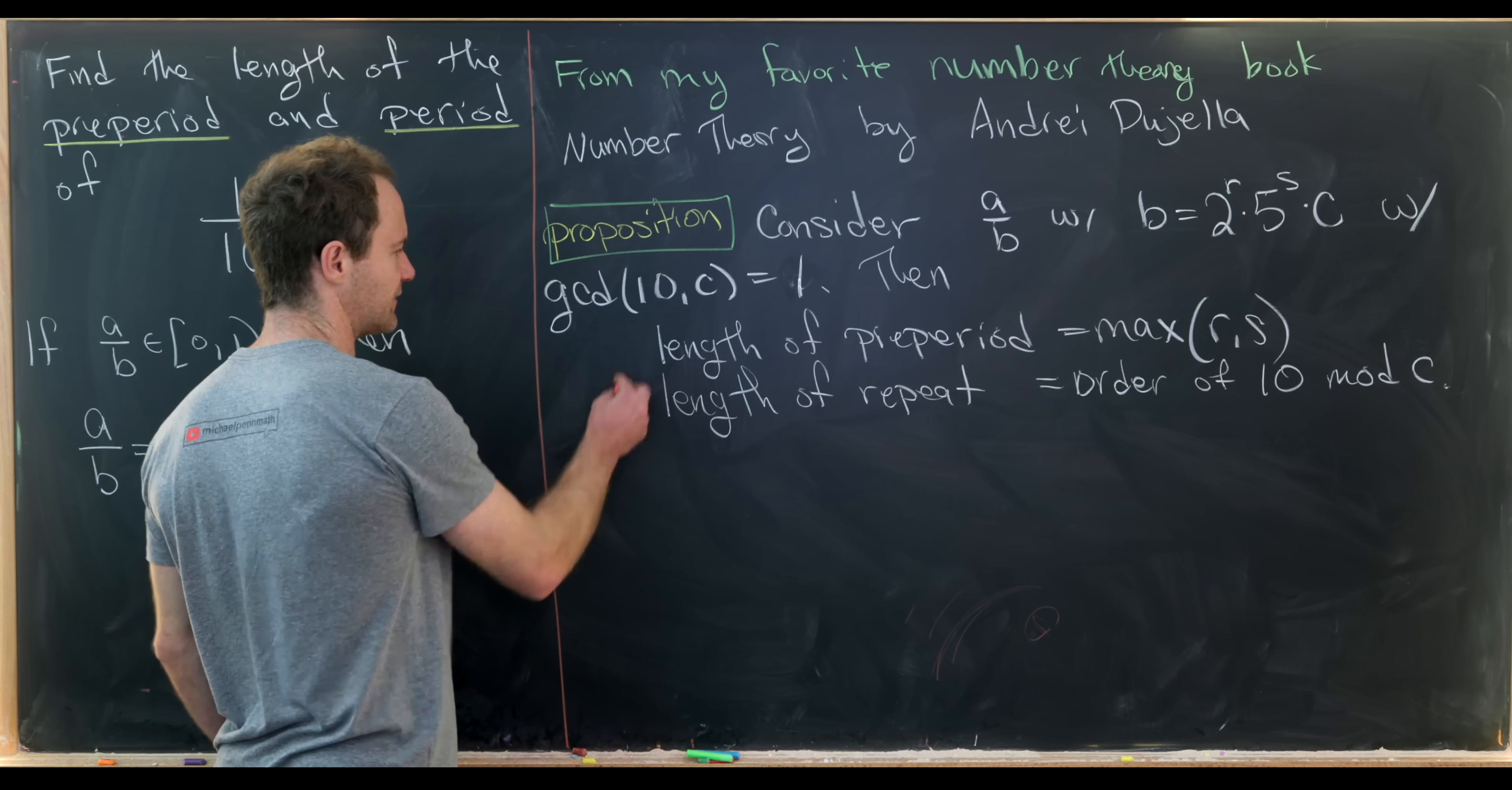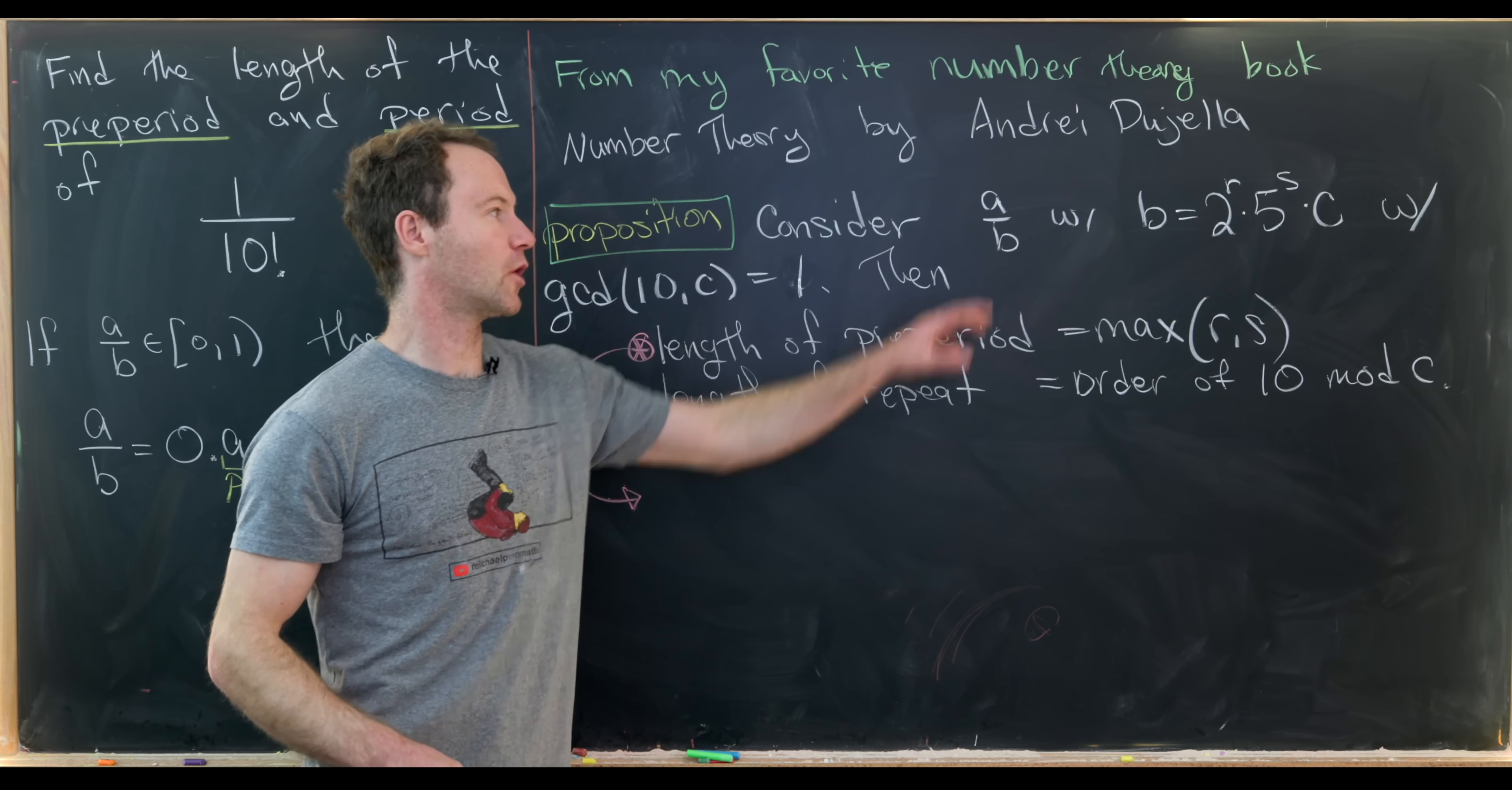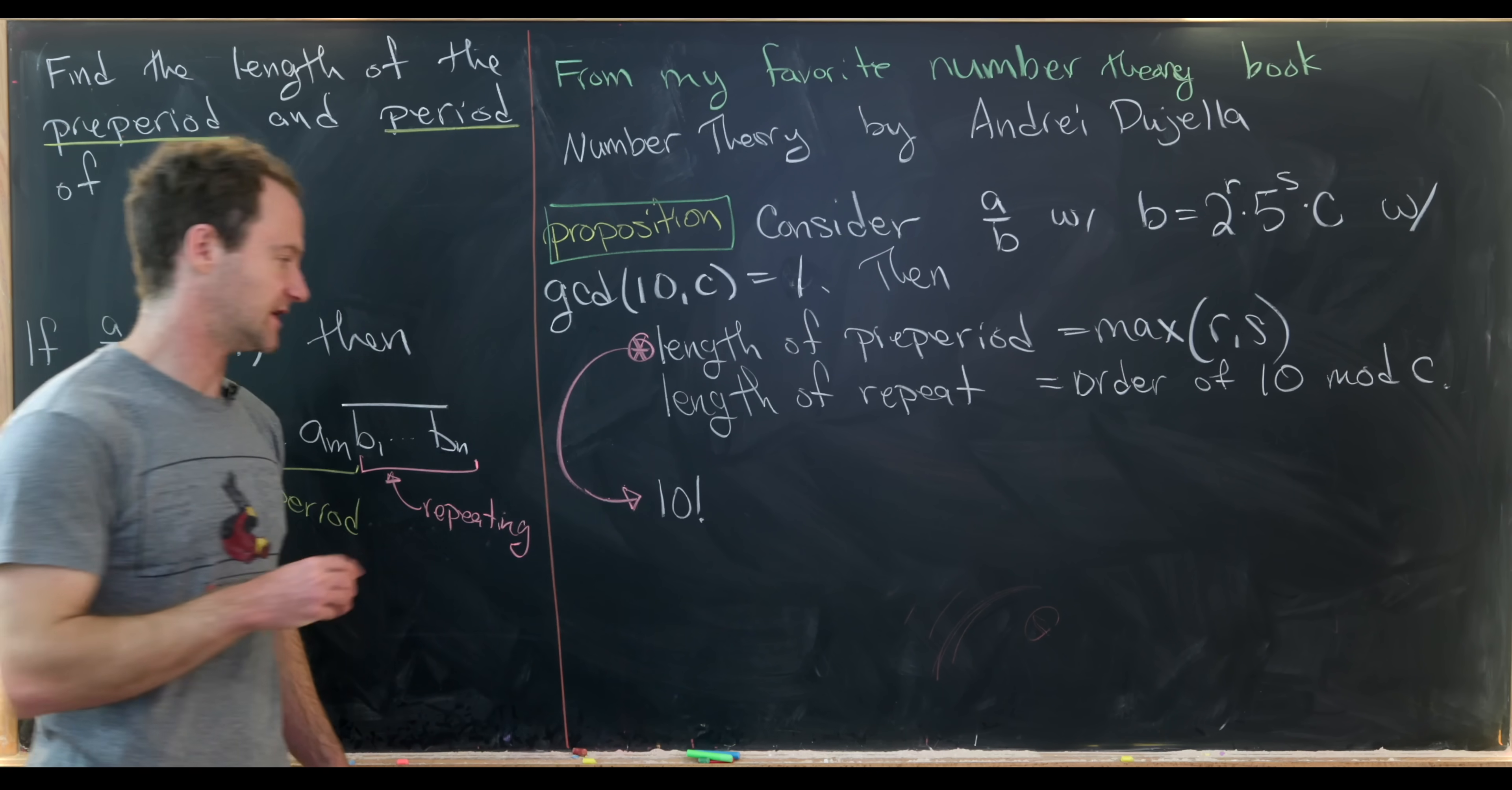So let's take care of this first bit first, this length of the pre-period, because that calculation is a little bit simpler than the length of the repeat, and requires less number theoretic machinery. So let's notice that both of these results have something to do with only the denominator here, and so only with 10 factorial. So let's see if we can write 10 factorial in this form as a power of 2 times a power of 5 times a number that doesn't have any 2s or 5s in it.